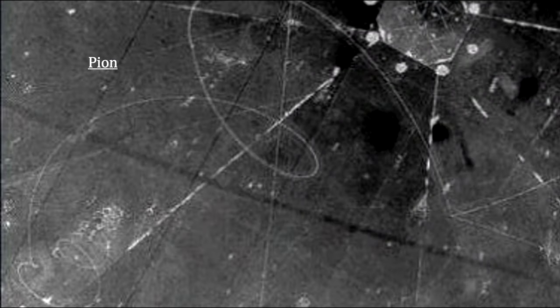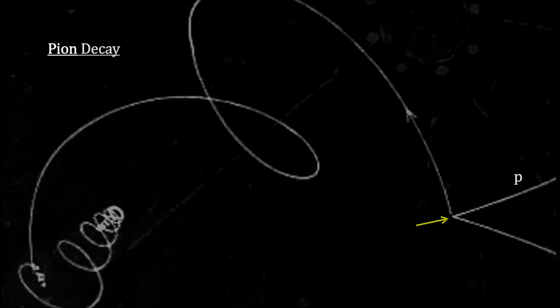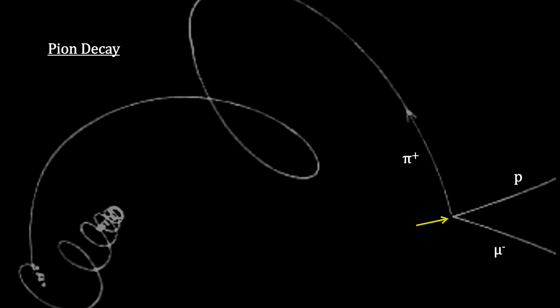In 1947, using cosmic rays at high altitudes, this particle was found. Here we see an event that kicks a proton into motion and creates a muon and a pion. Then we see the pion decay into an anti-muon that itself decays into a positron.